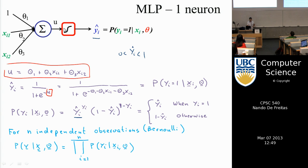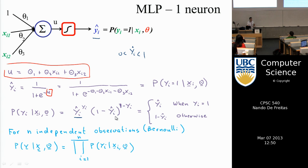The signal u is then passed through a sigmoid — 1 over (1 + e^{-u}) — squashing it to be between 0 and 1, which we interpret as the probability of y being equal to 1. The binary probability P(y | x, theta) is a Bernoulli distribution with success probability y-hat and failure probability 1 minus y-hat.